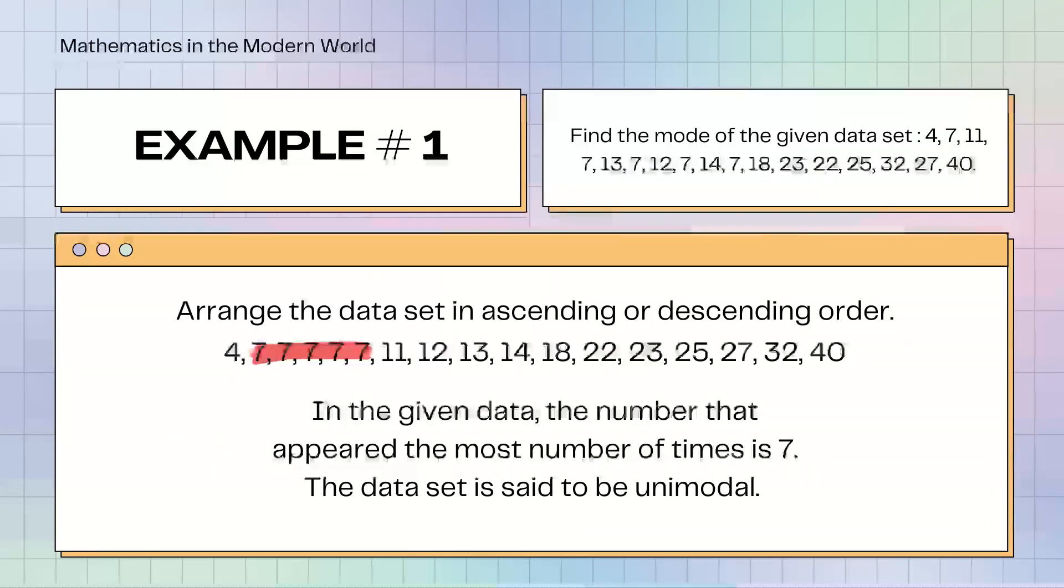Example number 1. Find the mode of the given dataset: 4, 7, 11, 7, 13, 7, 12, 7, 14, 7, 18, 23, 22, 25, 32, 27, 40. We will arrange the dataset in ascending or descending order. I personally arrange the data from least to greatest.